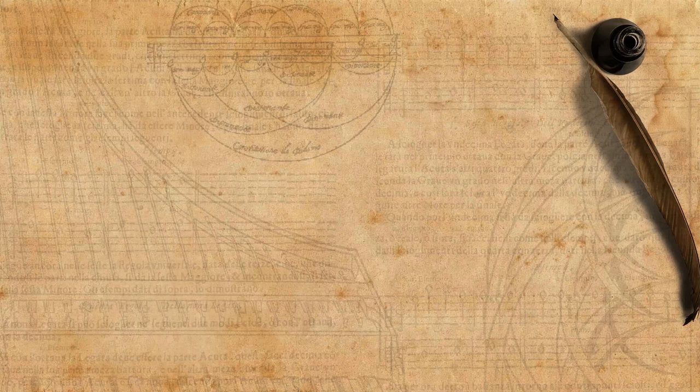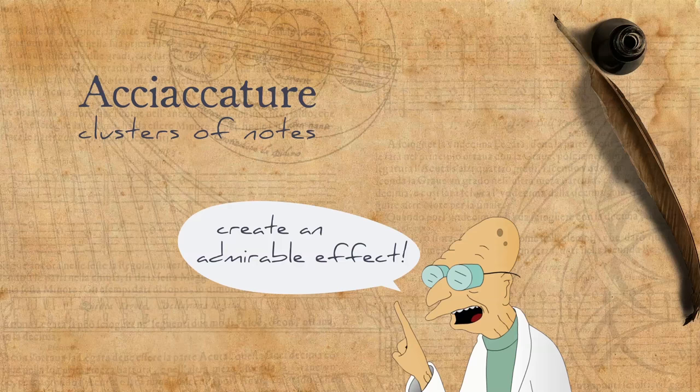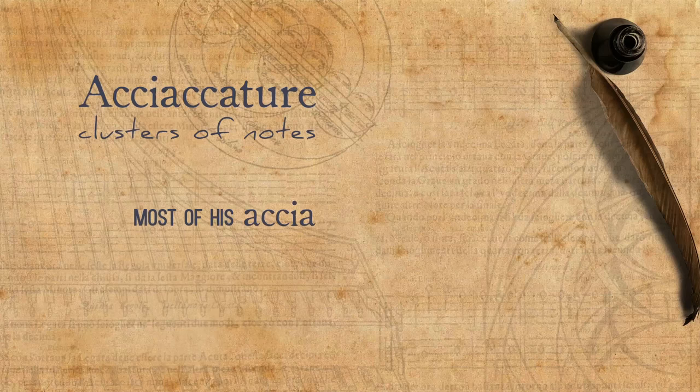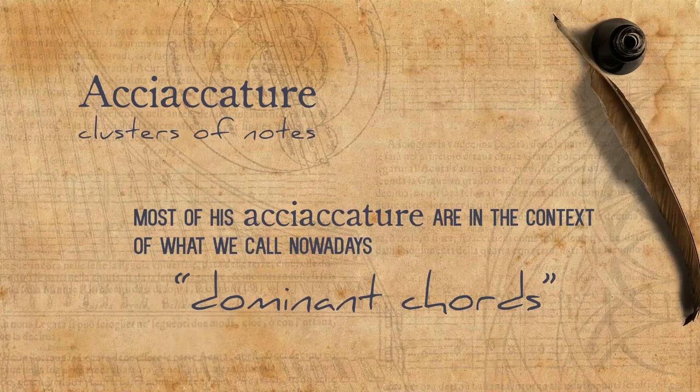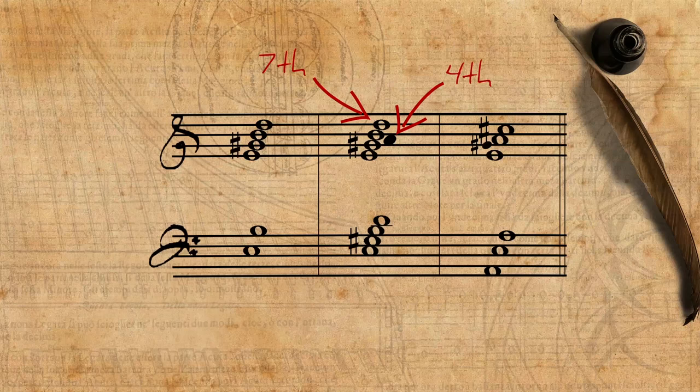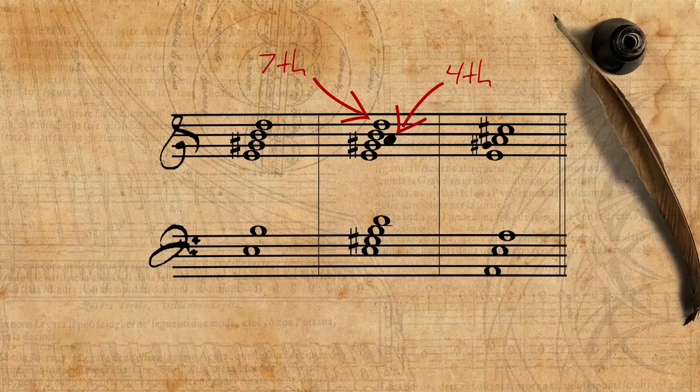Acciaccature are clusters of notes that according to Gasparini create an admirable effect. Trying to summarize his points, we see that most of his acciaccature are in the context of what we call nowadays dominant chords. In addition to the seventh we all know, he adds also the fourth.